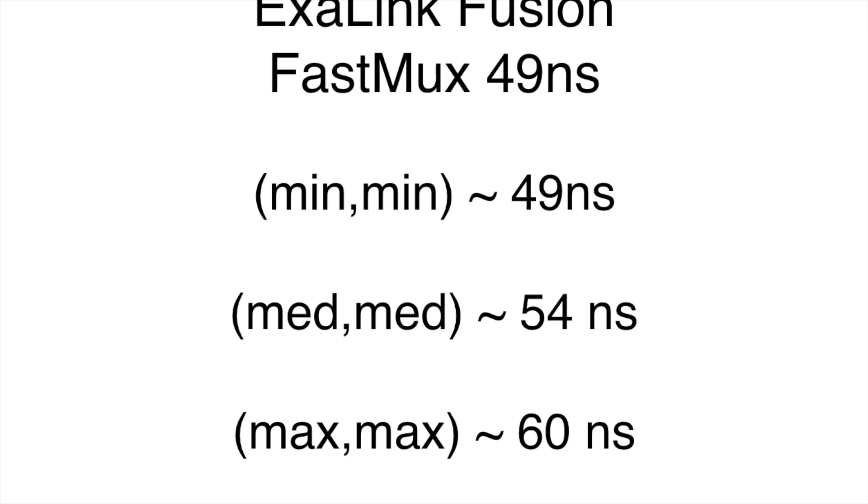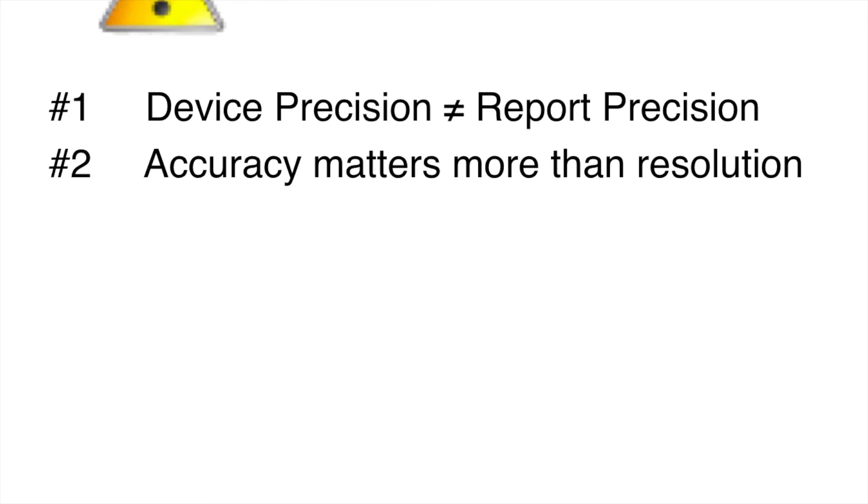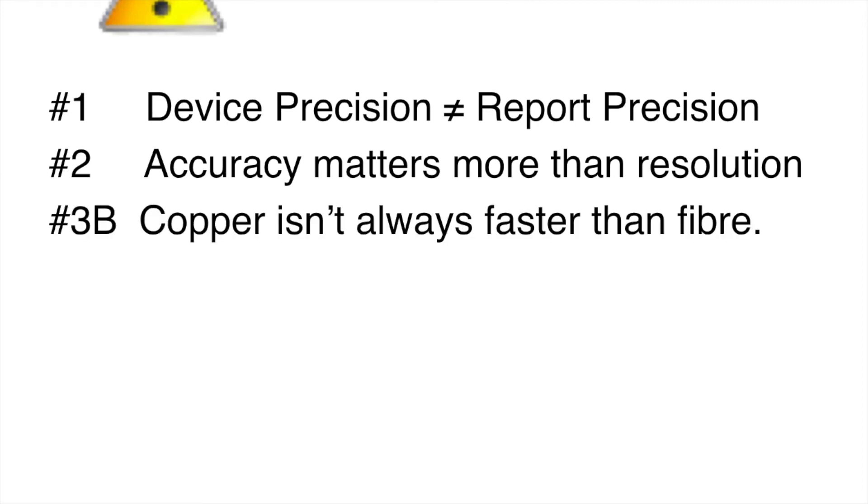So that's the end of part four. In summary, I'd like to just go through some of the gotchas that we've discovered along the way. We learned that device precision is not always equal to the reporting precision. We learned that accuracy does matter a lot more than resolution when doing this sort of measurement, and we also learned that copper isn't always faster than fiber. Finally, we learned that 1 m isn't actually the same as 1.0 m, and that all of these issues need to be taken into account when doing high precision measurement.